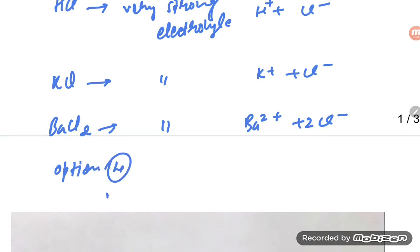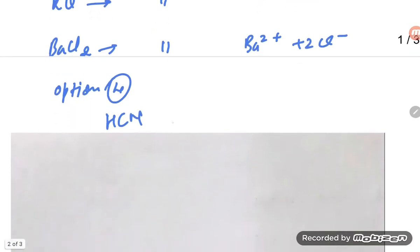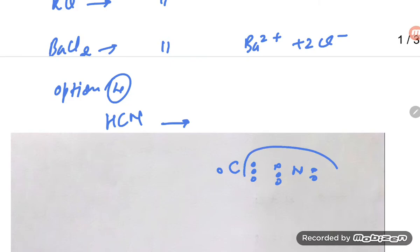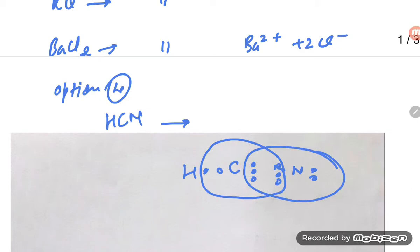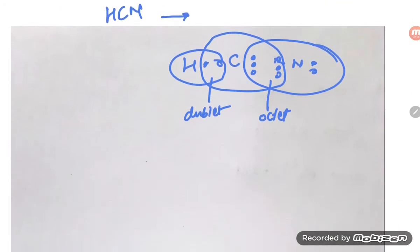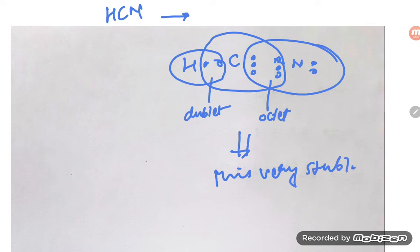Option four is HCN. To understand it, let us look at the structure. Carbon has four valence electrons and nitrogen has five valence electrons. Hydrogen has one valence electron. Carbon achieves its octet and hydrogen achieves its duet.